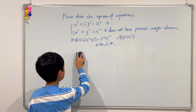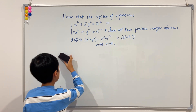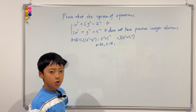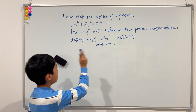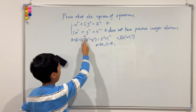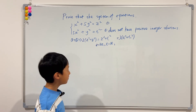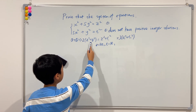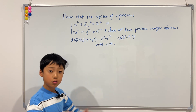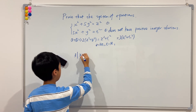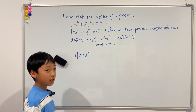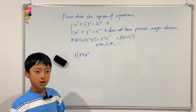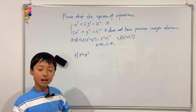Now we notice that 2(x² + y²) must equal 3(z₁² + t₁²), which means the right-hand side is divisible by three. Since two and three are coprime, we must know that x² + y² is divisible by three. Using the same logic as before, x² and y² are each divisible by three, which means x and y themselves must each be divisible by three.